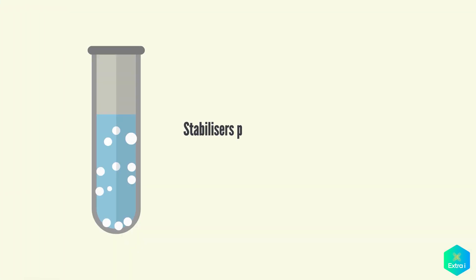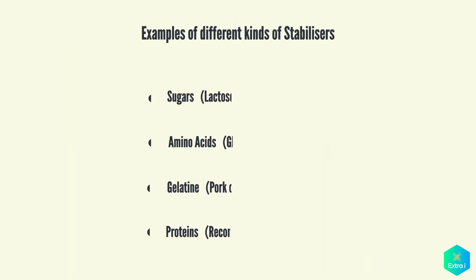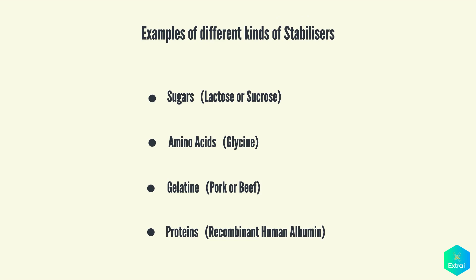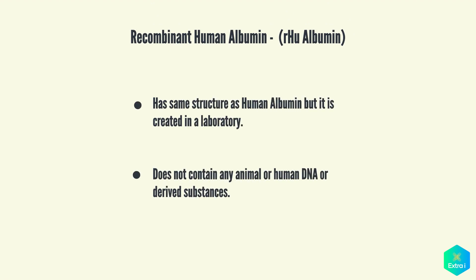Stabilizers prevent chemical reactions from occurring within the vaccine and prevent the vaccine components from sticking to the vaccine vial. Stabilizers can be sugars such as lactose or sucrose, amino acids like glycine, gelatine, and proteins such as recombinant human albumin. This is a substance that has the same structure as albumin found in humans; however, it is made in a laboratory and does not contain any animal or human-derived substances.